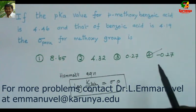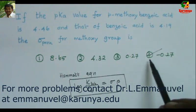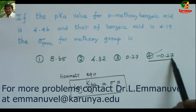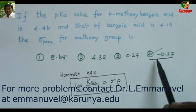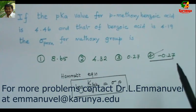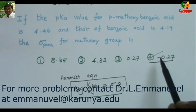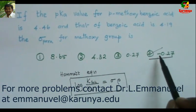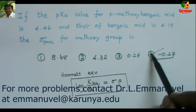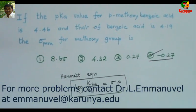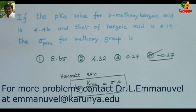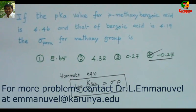Since OMe is an electron-donating group, you can easily predict that the sigma value will be negative. This is the only option with a negative sign, so we can select this answer very easily. Thank you for watching, have a nice day.